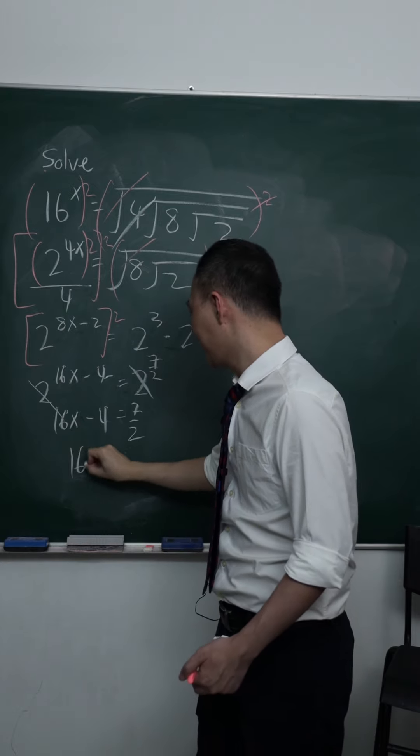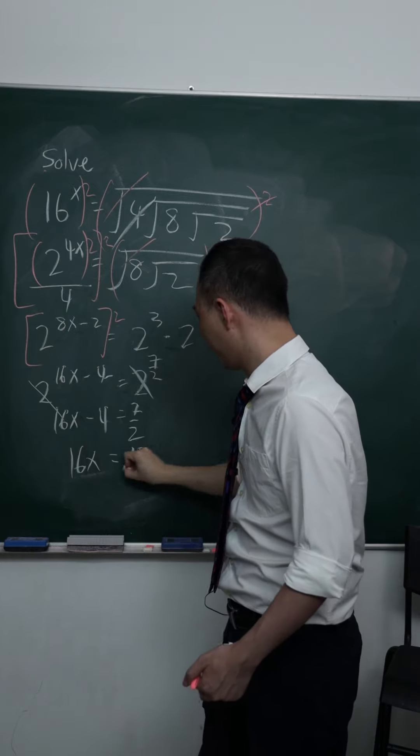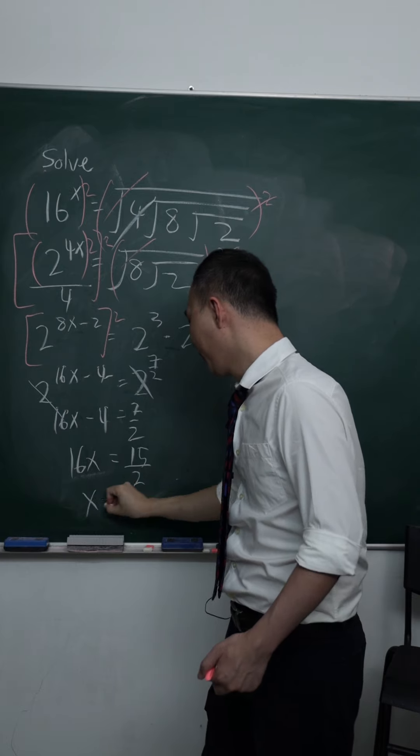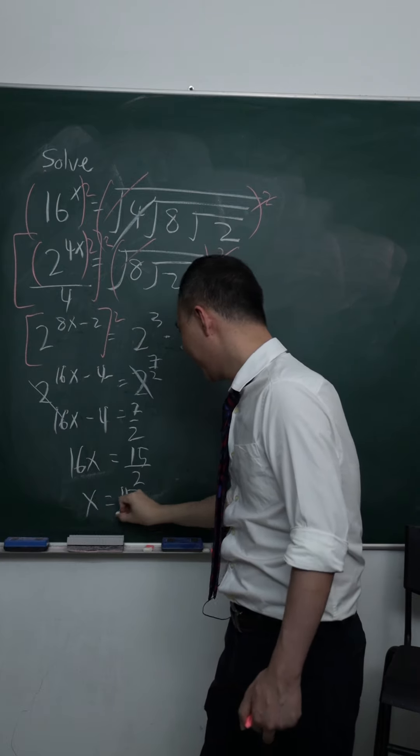So therefore, 16x will become 15 over 2. Then, x will become 15 over 32.